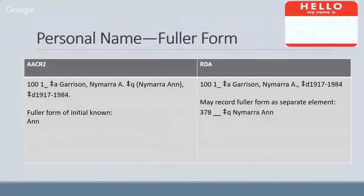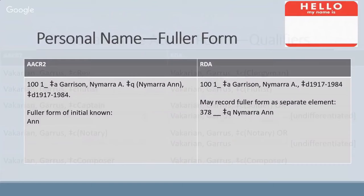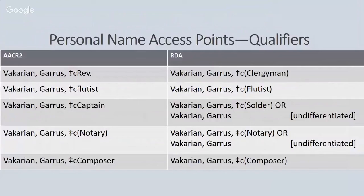Another thing we had with AACR2 was the fuller form of the name. If they had a middle name and used their middle initial, we would include a subfield Q spelling out their first name and middle initial. Because we transcribe, it's what we find on the item — that's what we use for the creator's name. If you know there's a fuller form of their name, you can include it as a separate element, but it's not required. There are also qualifiers with personal names — whereas before we might have abbreviated 'reverend,' now we would just say they're a clergyman, keeping it more general.